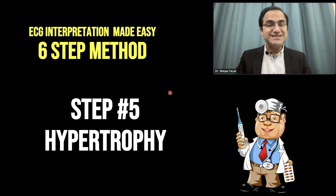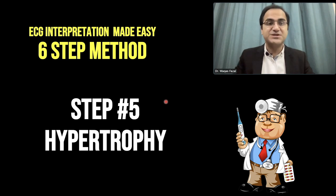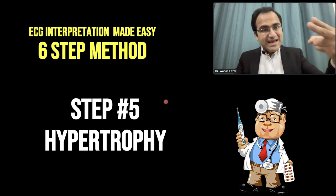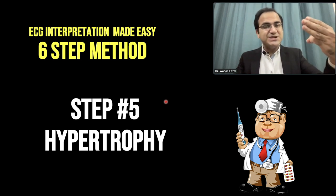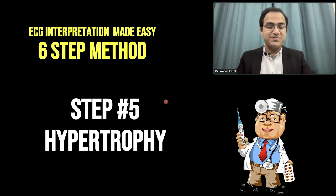In our video series of ECG interpretation made easy by the 6-step method, in this video we are going to talk about step 5 of ECG interpretation, in which we will assess hypertrophy. The previous 4 steps were general impression, calibration, rhythm interpretation, and QRS determination. Now we are on the 5th step.